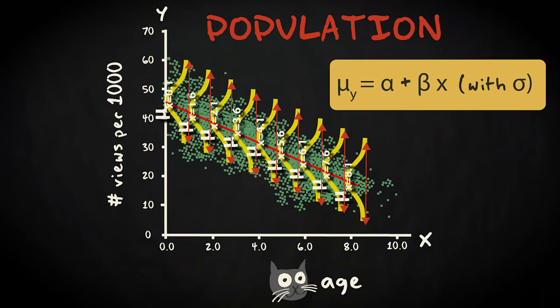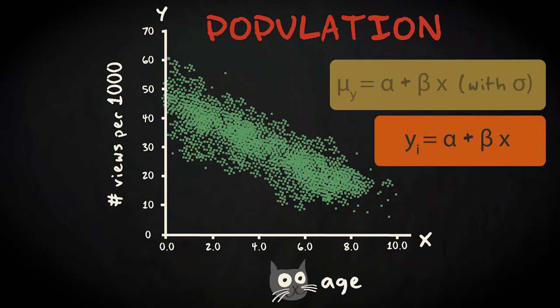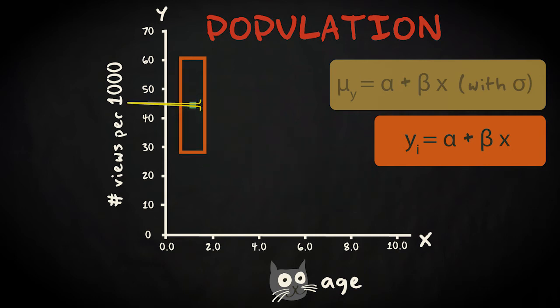If we modeled the predicted response value for individual cases, for example, by saying y sub i equals α plus β times x sub i, it would mean that we expect all cat videos of all one-year-old cats in the population to have exactly the same popularity score. And of course, that would be very unlikely.